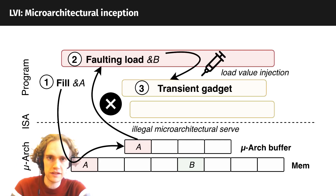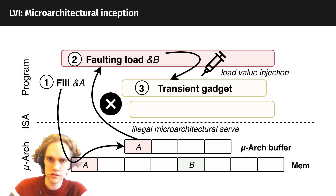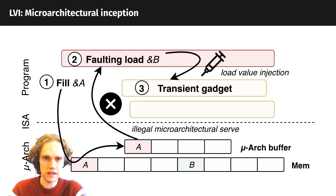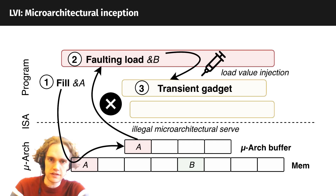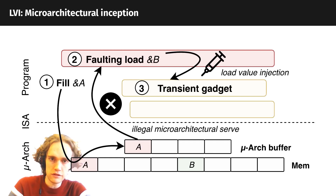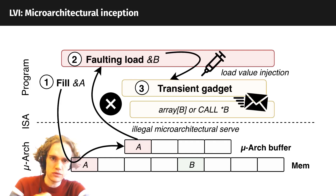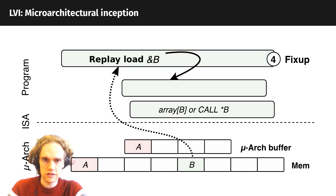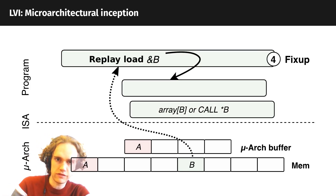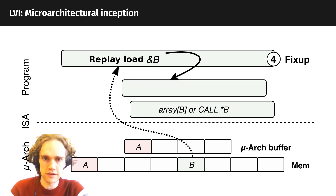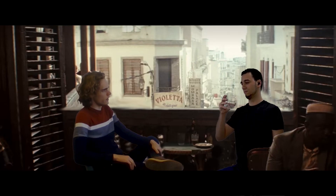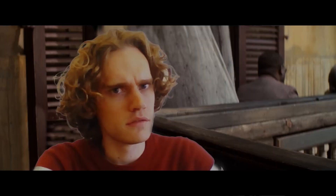That's obviously bad — we can do all kinds of things like transient buffer overflows, control flow hijacking, you name it. An important detail: the CPU is not completely wrong. After we do our control flow or data flow redirection, the CPU will detect the inception, the victim will wake up from its dream, and there will be no traces left of this attack. Load value injection — it's perfectly possible. Just very difficult.